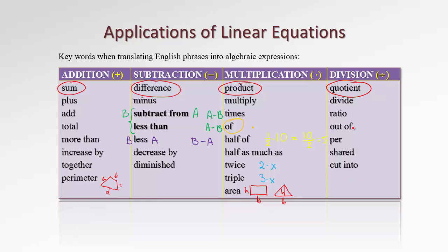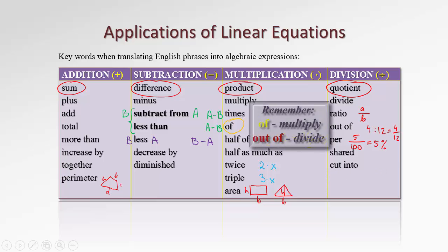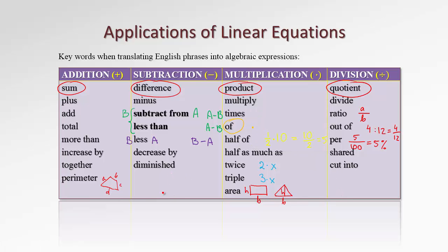For division, we can say divide something by something, or refer to a ratio — meaning A over B with a division bar. We can say 'out of', for example '4 out of 12', which can be written as the fraction 4/12. 'Per' means division — like per hundred; five per hundred means five percent, where 'cent' refers to a hundred in the denominator. Also 'shared' — sharing among five children — or 'cut into' sections. Remember: 'of' means multiply and 'out of' means divide. This list can be extended with other words.